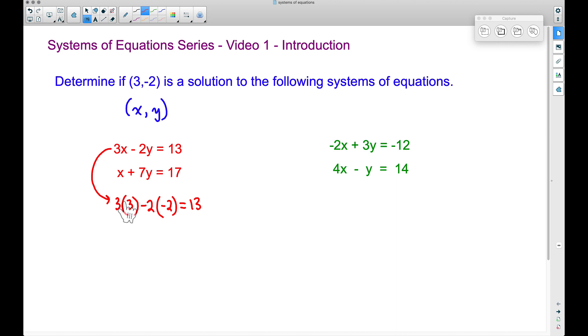Well, if we work this out, three times three is nine, and then I think of this as a negative two times a negative two, that's positive four, and nine plus four does give us 13. Therefore, it does work for the first one.